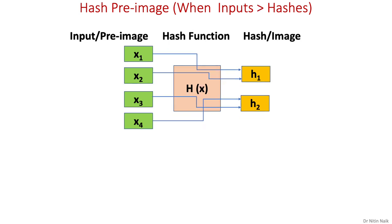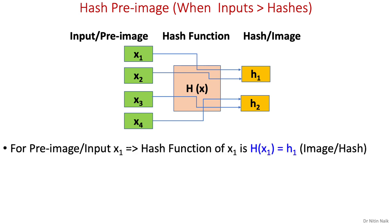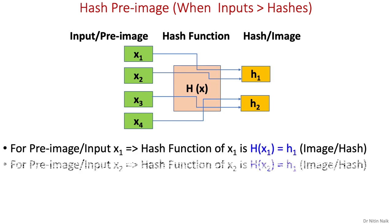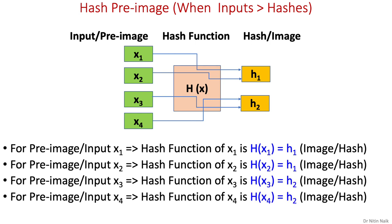Now let's look at the real condition where the number of inputs is significantly greater than the number of hashes. In this example we have 4 inputs and 2 hashes, so more than one input is mapped to each hash: x1 maps to h1, x2 maps to h1, x3 maps to h2, and x4 maps to h2. So the first two inputs map to h1 and the last two inputs map to h2.